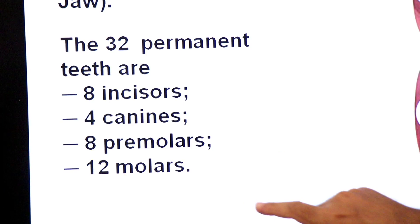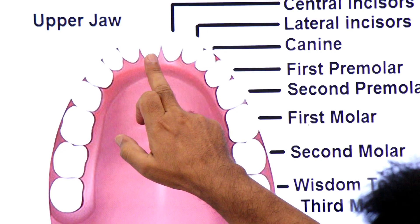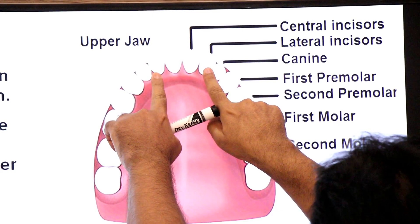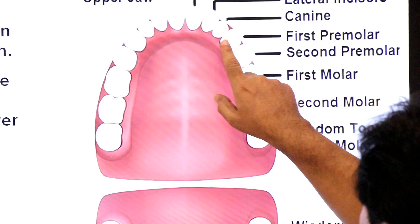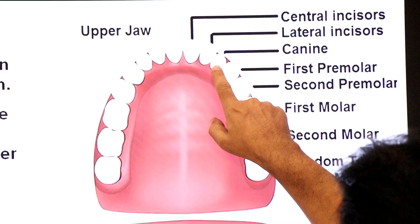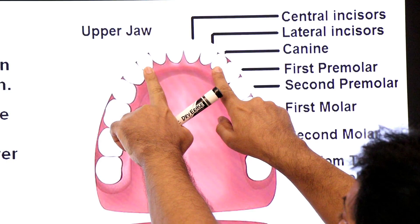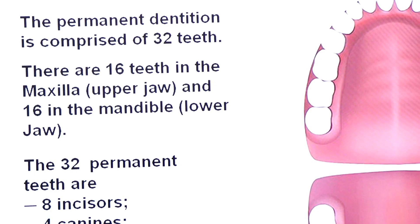The 8 incisors include 4 in the upper jaw — 2 central incisors and 2 lateral incisors — and 4 in the lower jaw. The canines are the pointed teeth used for tearing food; there is 1 canine in each half of each jaw — 2 in the upper jaw and 2 in the lower jaw, making 4 canines total. Then there are premolars: 4 in the upper jaw and 4 in the lower jaw, making 8 premolars.